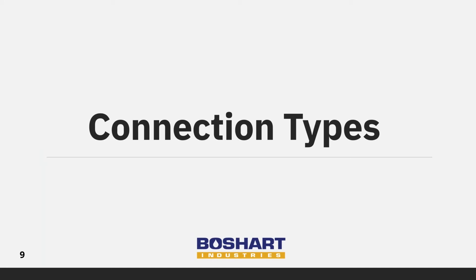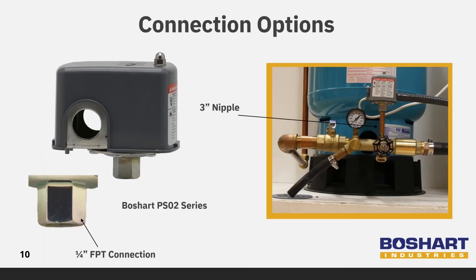Now we will look at connection types. Quarter-inch FPT connections are the most common and are ideal for installing on tank tees. They typically use three-inch nipples to lift the switch up high enough to allow the replacement of the pressure gauge without removing the switch. They can also be easily adapted to connect to tubing using barbed tube, compression, or quick connects for any pressure connection desired.